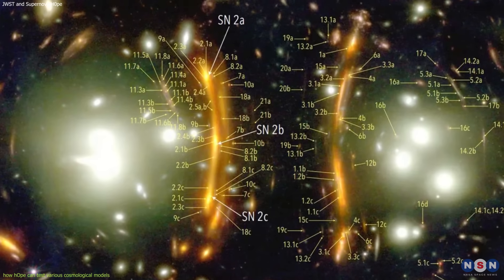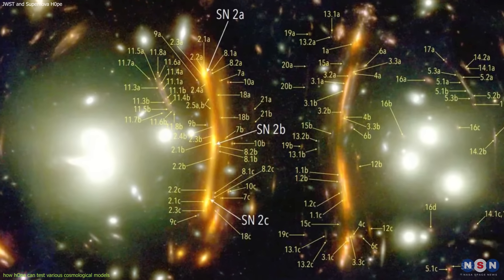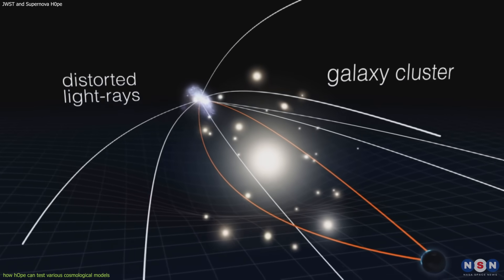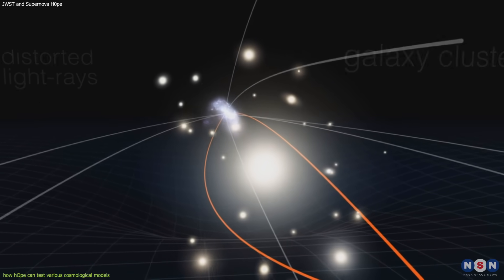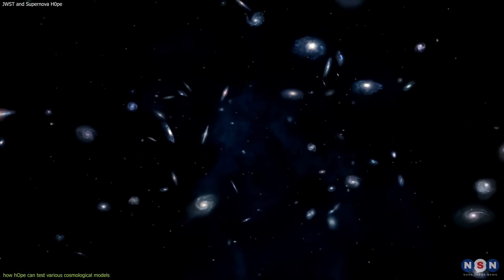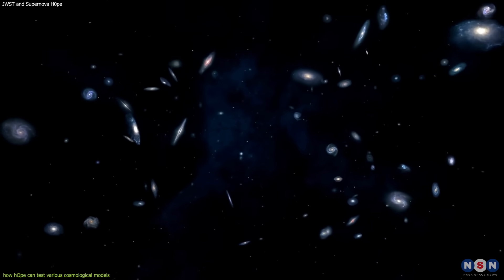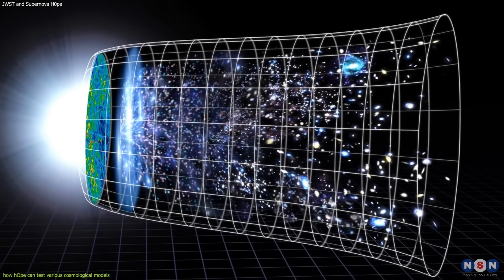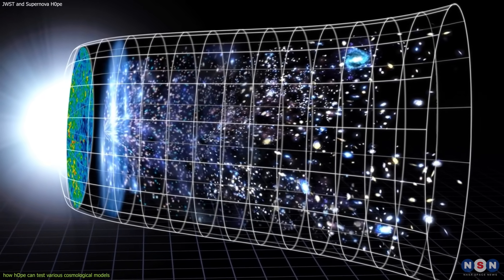It is a rare and well-observed type 1A supernova that appeared in three different images due to the gravitational lensing effect of a massive galaxy cluster. It offers a unique opportunity to measure the expansion rate of the universe in a new and independent way, and to test various cosmological models and parameters that affect this expansion rate.